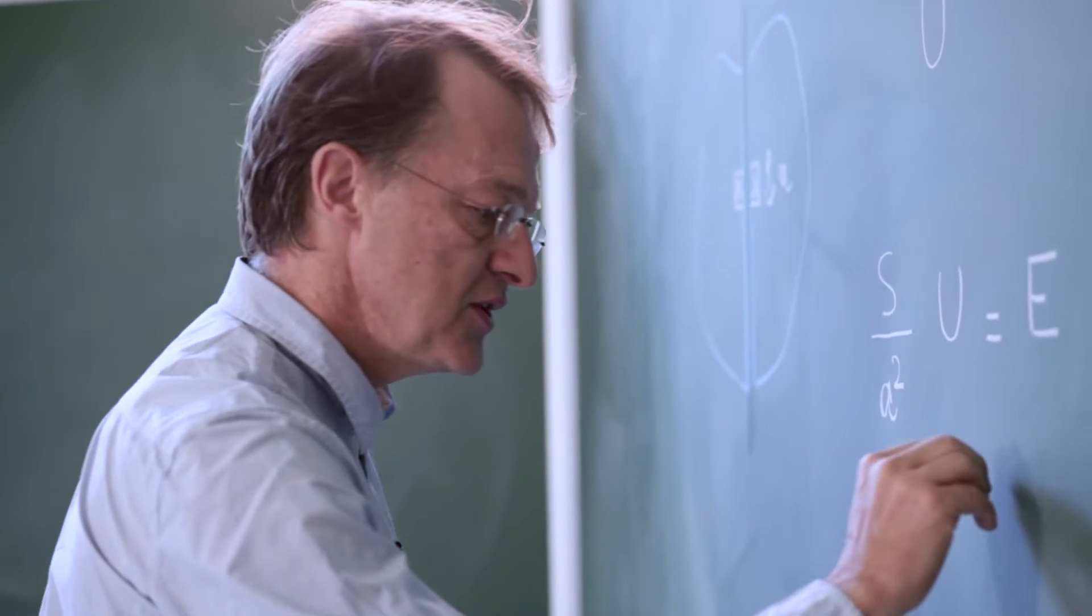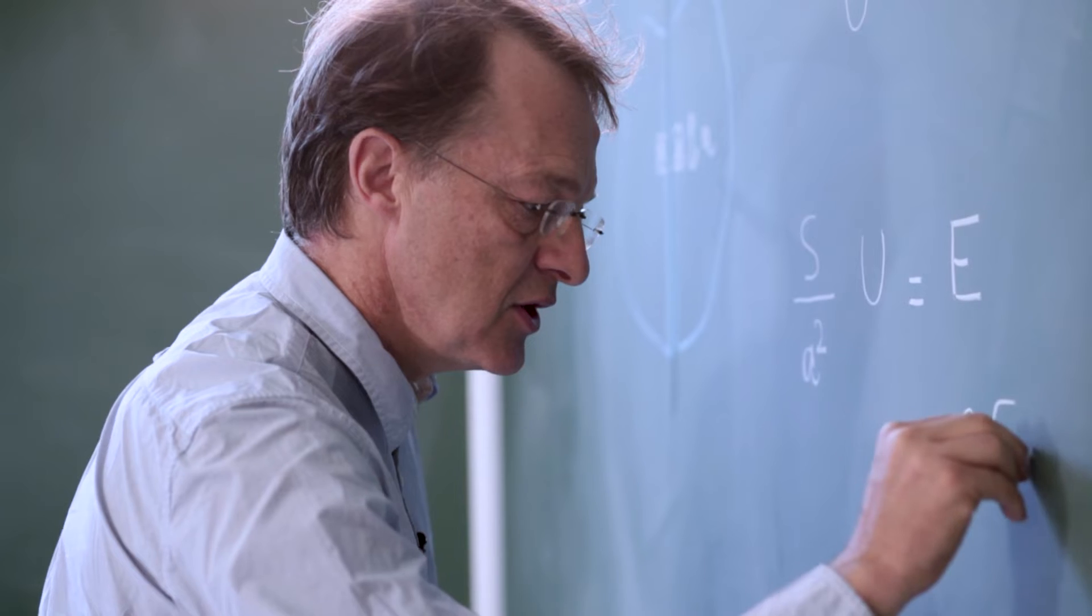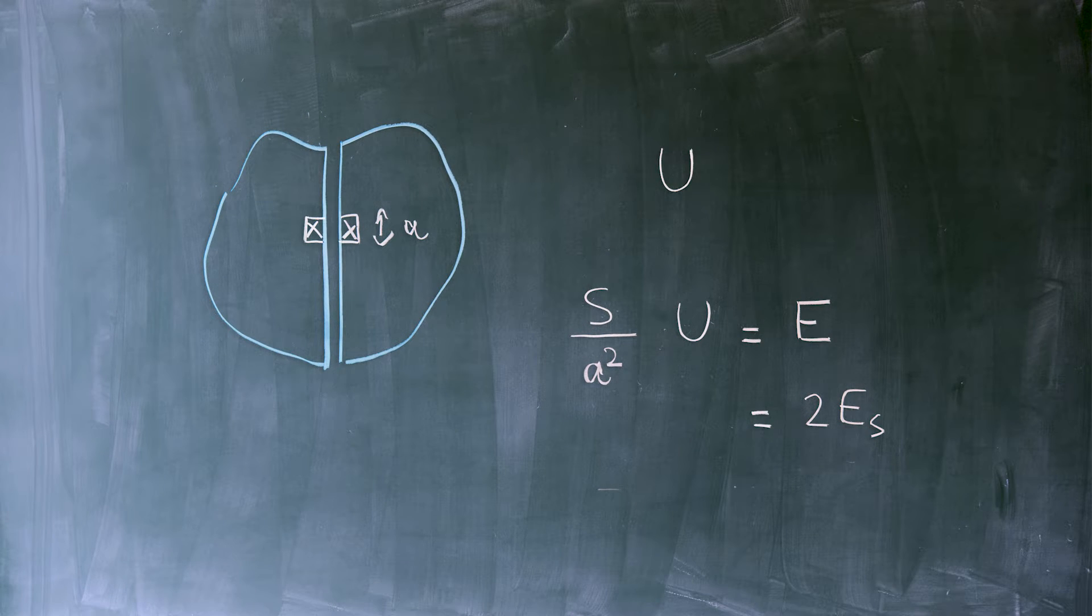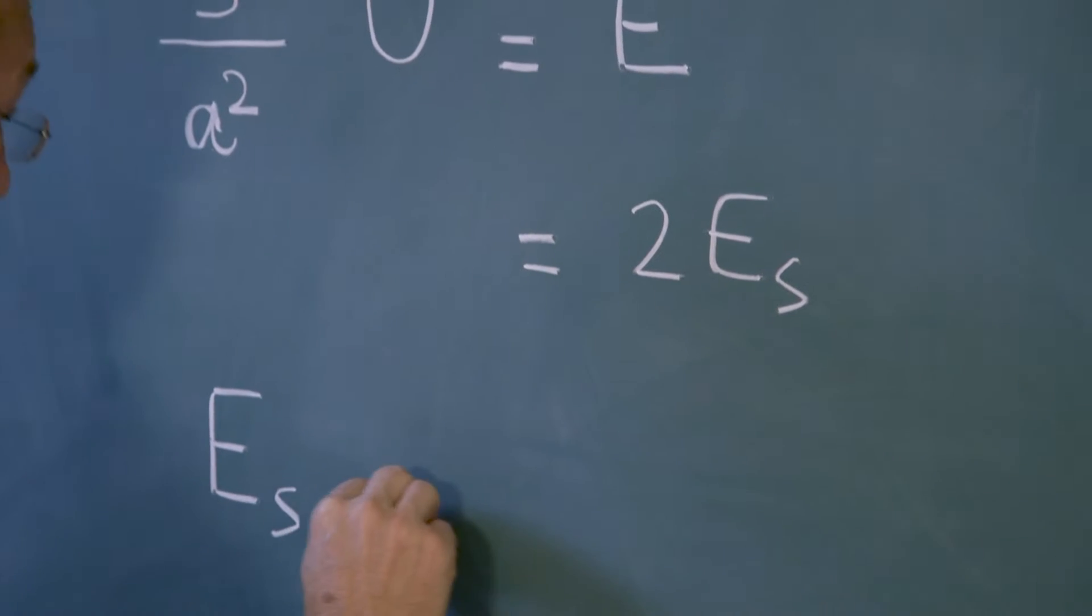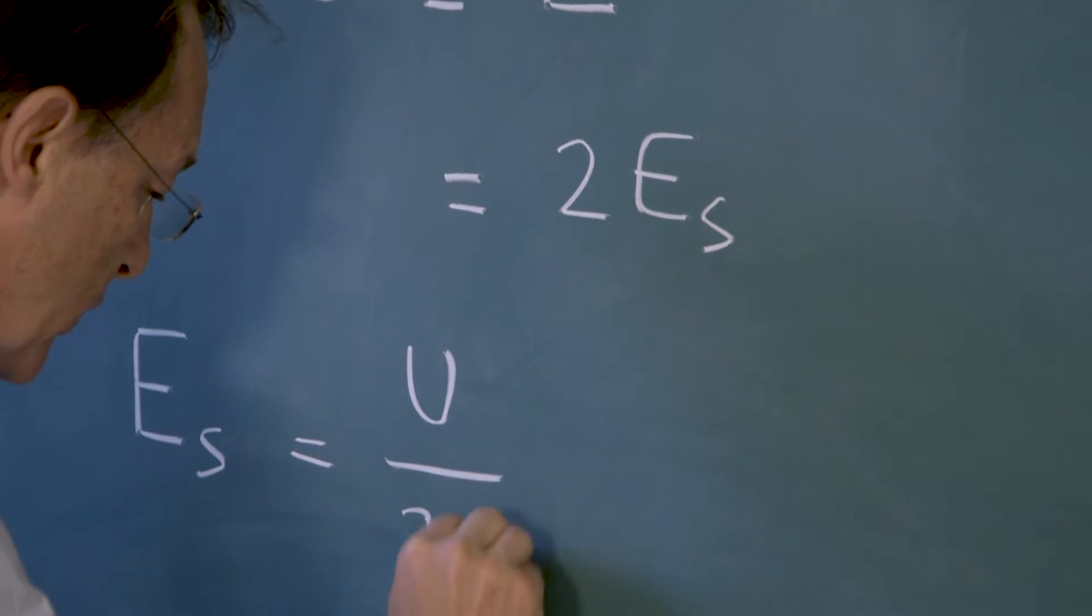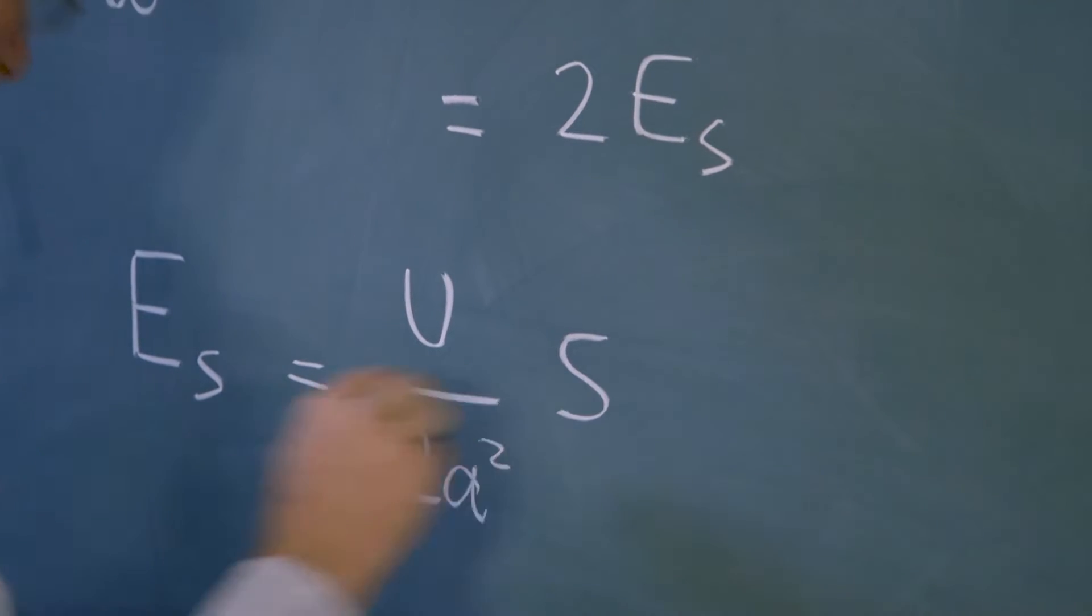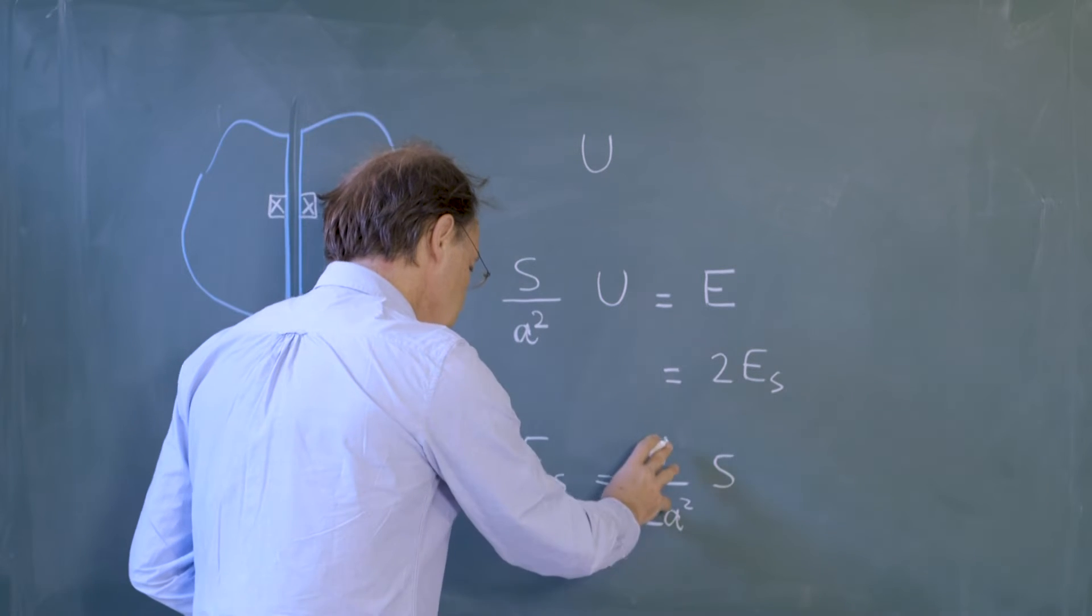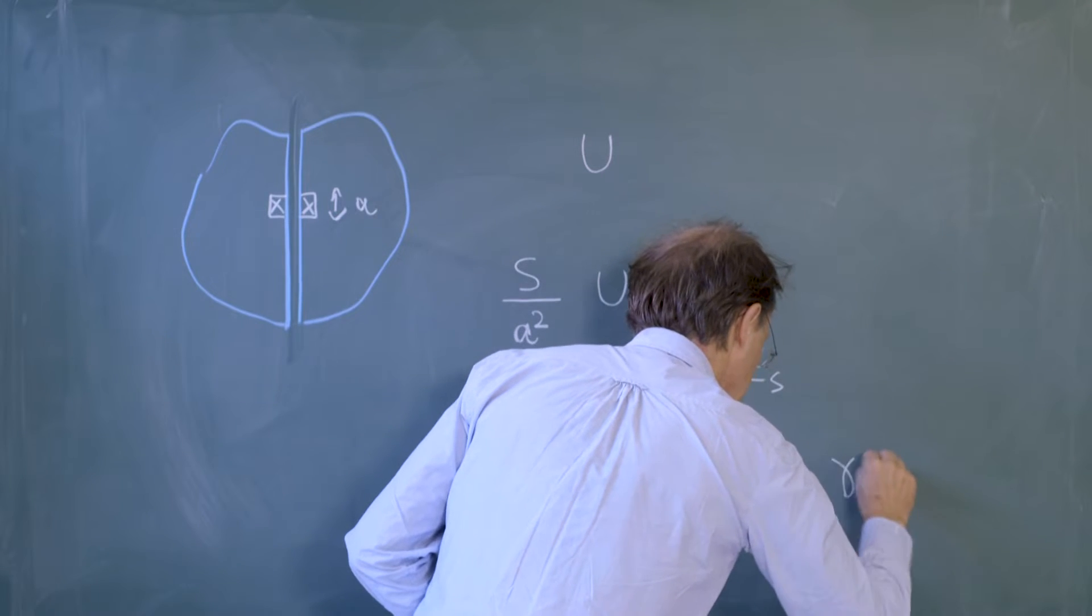Since we created two interfaces, this is twice the surface energy of each surface. So that we get a relationship telling us that the energy necessary to create an interface is U over 2A squared times S. This is called the surface energy and the coefficient of the surface area is called the surface tension of the liquid.